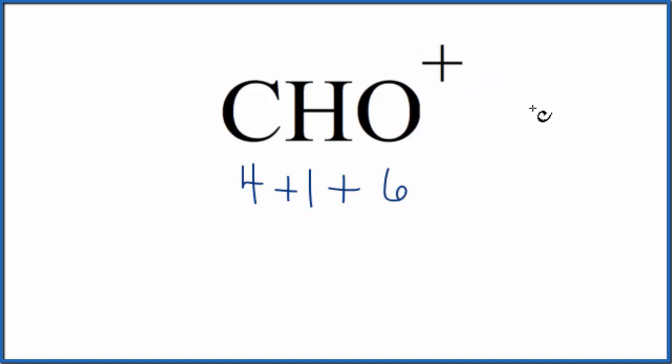This positive, that means that we've lost a negative charge. We've lost an electron, so we need to subtract 1. When we do that, we find that we have 10 total valence electrons for the CHO plus Lewis structure.